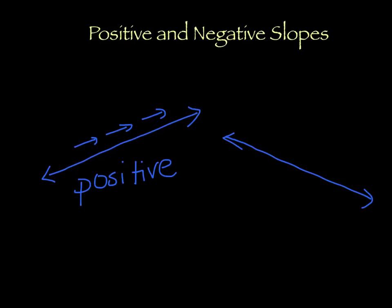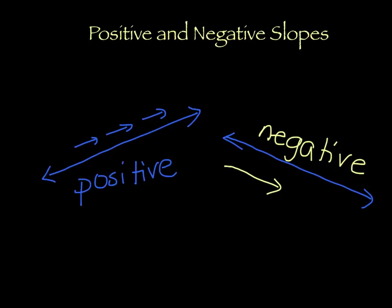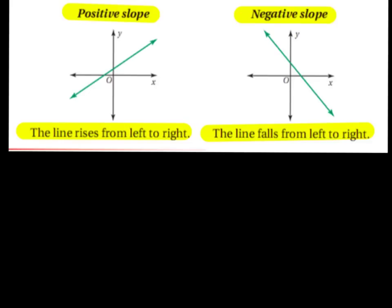If I draw a line going like this, as I go from left to right the line is going down. So anytime the line is going down from left to right, it has a negative slope. All the lines in the last video were positive slopes — they were all going up. Remember, as you go from left to right, if the line is going up, it has a positive slope.